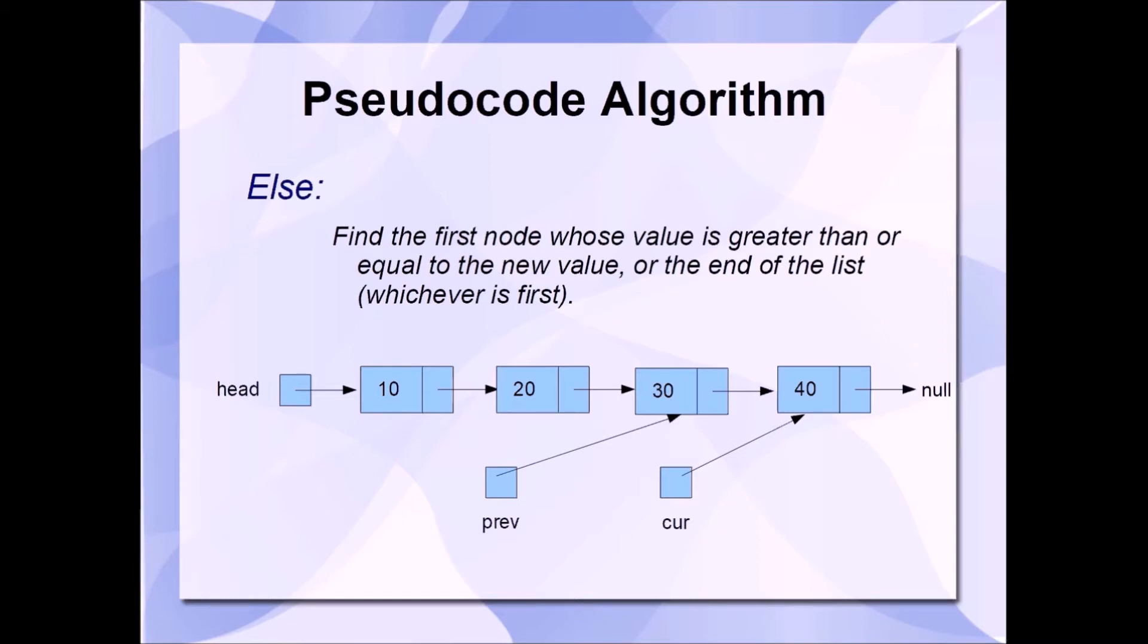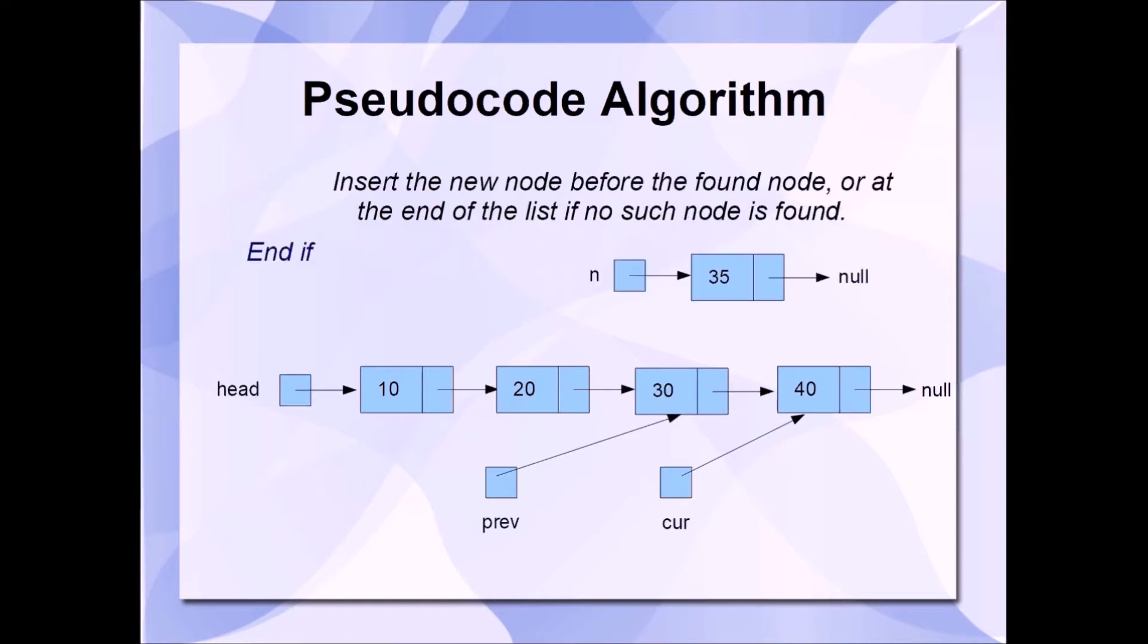Now, is the value inside of curr null? No. Is the value inside of curr's node less than our new value of 35? No. So, the traversal stops, and we found our insertion point. So, let's do some insertion.